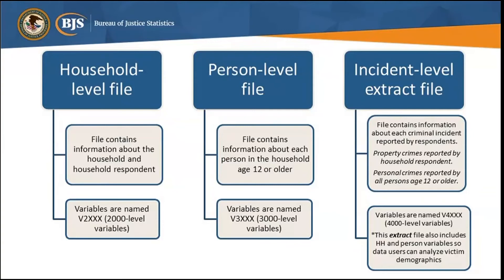Remember the incident-level extract file has household and person demographic characteristics on it. The household-level variables would be named V2XXX and the person-level variables would be named V3XXX on this incident-level extract file. The household- and person-level files contain records or rows of data for all persons and households in the sample, even if they didn't report any victimization within the last six months — because we want to know the denominator so that we can say, out of X persons or households in the population, Y experienced a victimization or incident. The incident file only contains people who report victimizations, and each row of data is a different incident. If someone reported more than one incident, each of those incidents would be a separate row of data on the file.